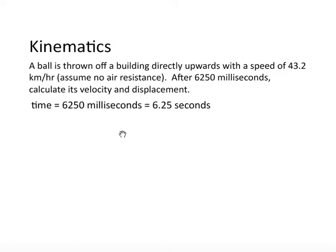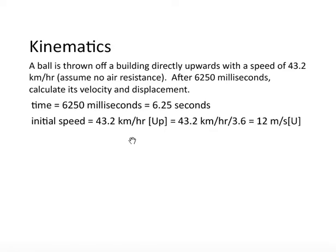Here's our next question: a ball is thrown off a building directly upwards with a speed of 43.2 kilometers per hour. Again, we're assuming no drag, no air resistance. After 6,250 milliseconds, calculate its velocity and displacement. For starters, we're given our time in milliseconds. To convert milliseconds into seconds, we divide by 1,000. We're given initial speed, and immediately the units don't match. Kilometers per hour doesn't jive with seconds. So we need to convert kilometers per hour into meters per second. Recall from a previous video, the conversion factor was 3.6. So our initial speed is 12 meters per second up.